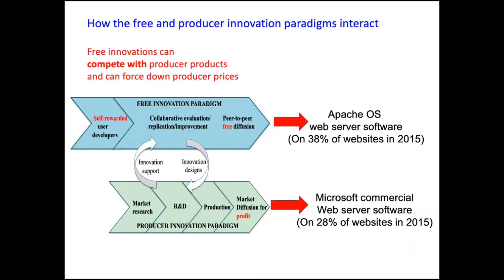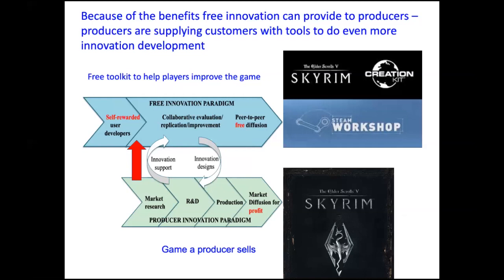There are other ways the two paradigms interact: free innovation can compete with producer products, and you also have systems where you as companies can support your particular users to get them to innovate in directions of interest to you. Basically you can say, 'those guys innovate - let's give them tools, let them innovate on a site we manage, observe who's doing what, observe what's popular, and incorporate some of those innovations in our own products.'